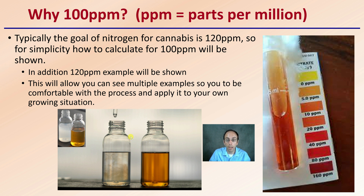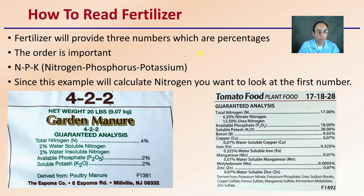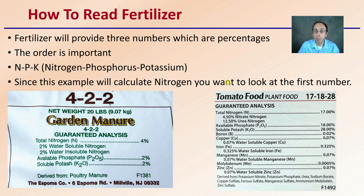So you know just how much to add without over-adding anything to your plants. First off, we have to start with how do you read a fertilizer label. Fertilizers will provide three numbers which are percentages. The order is important — it goes nitrogen, phosphorus, and potassium. Since this example will calculate nitrogen, we're only going to be looking at the first number.